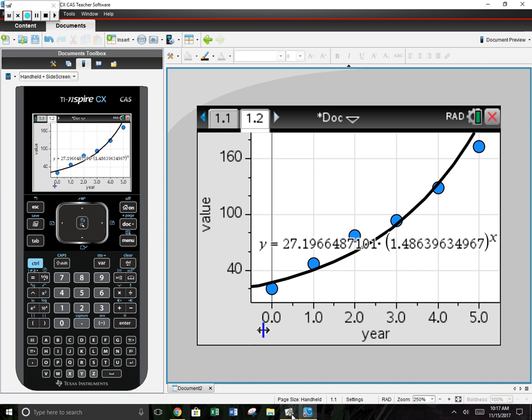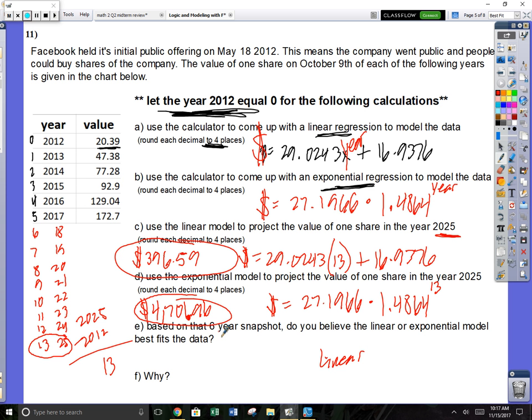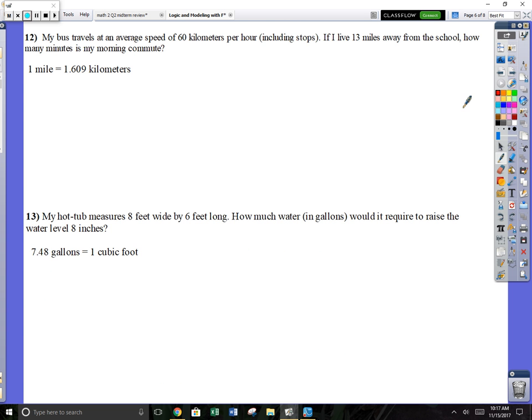Over time it's going to fit more of a linear model. Exponential is going to grow way too fast. These numbers are going to get way too big. If it was true, then everyone would be dumping money into Facebook hoping that it would blow up to 4,000 bucks. But it probably won't. Linear, why? Because exponential grows too fast.